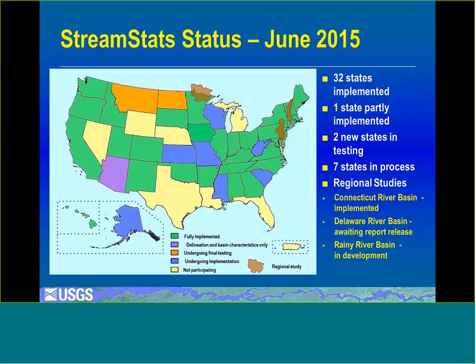This map shows the 32 states that are implemented now in green. There's one state, Arizona, that is implemented to compute basin characteristics, but you can't get estimates of flow statistics for ungauged sites in Arizona. We have two states, Montana and North Dakota, that are about to be released, and they also will just compute basin characteristics. In addition, we have seven states in the process of being implemented, and the yellow states on the map are not participating at this point.